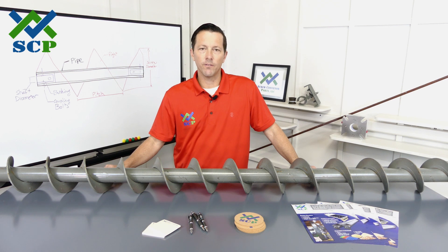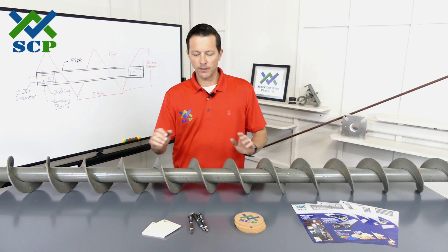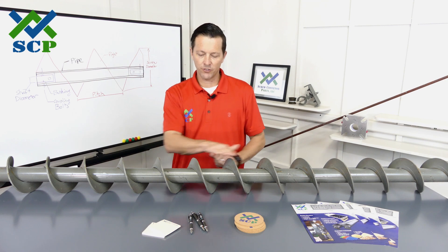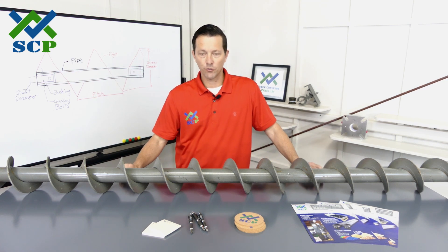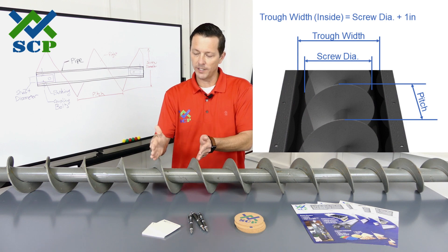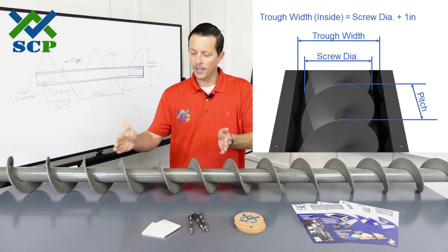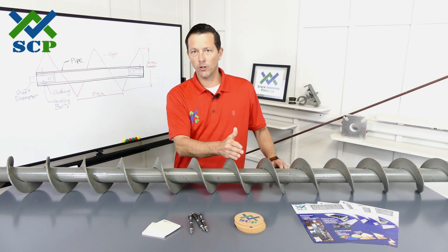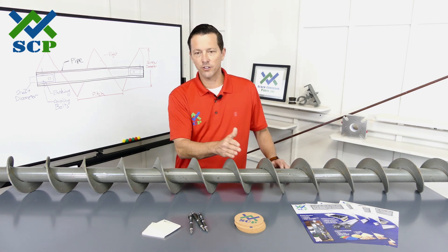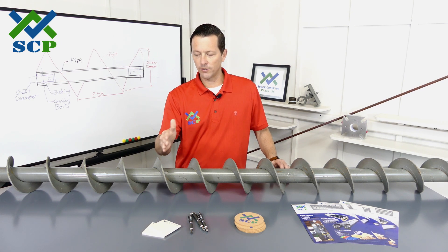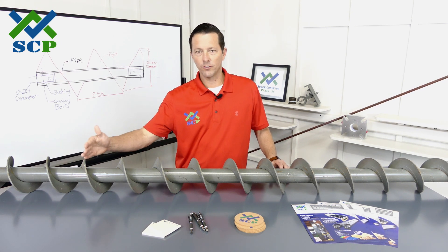There are a lot of options for flighting. The first thing we look at is the OD — the OD of this is a six inch diameter screw. The next thing we look at is the pitch: pitch is the distance from one flight to the next. Our standard for what we call a full pitch would be a six inch pitch on a six inch screw, so they're all continuous and all six inches from one to the next the entire length of the screw.